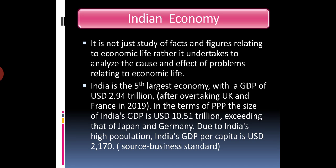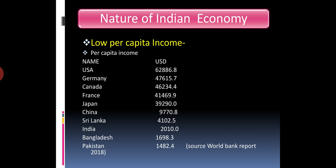India is the fifth largest economy with a GDP of US dollar 2.94 trillion. India achieved this fifth position in 2019 when it overtook the UK and Germany. In terms of purchasing power parity, the size of India's GDP is 10.51 trillion, exceeding that of Japan and Germany due to India's high population. India's GDP per capita is US dollar 2,170.